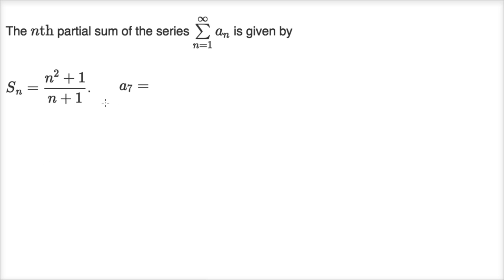All right, so one way to think about it is a sub seven. Let's think about how that relates to different sums. If we have a sub one plus a sub two, I'll just go all the way, a sub three plus a sub four plus a sub five plus a sub six plus a sub seven. So if I were to sum all of these things together, this entire sum, that would be S sub seven.